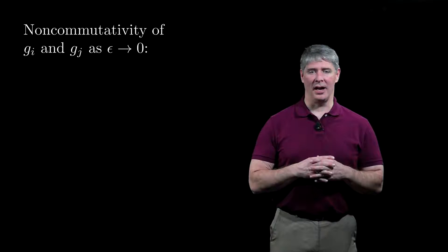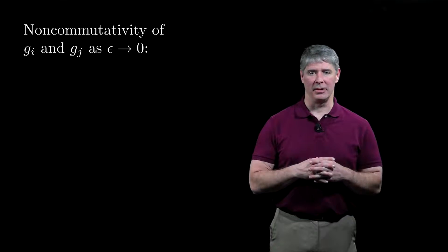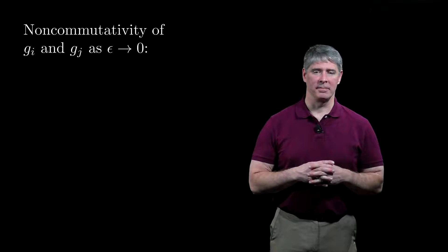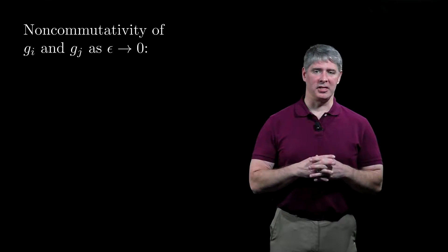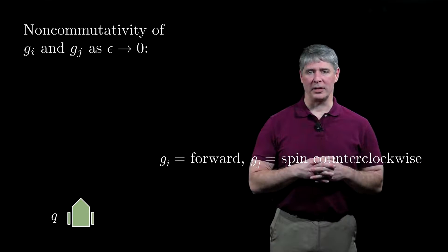The non-commutativity of the vector fields plays an important role in determining the controllability of a nonlinear control system, because we may be able to generate approximate motion in constrained directions by switching between vector fields. In general, we can calculate the non-commutativity of two vector fields as epsilon goes to zero using a four-step sequence. To illustrate it, let's use the two vector fields of the canonical non-holonomic robot.